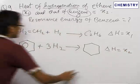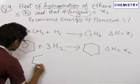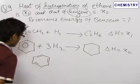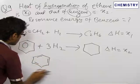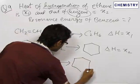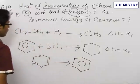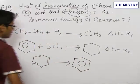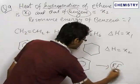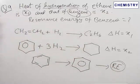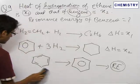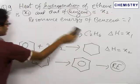Now, what is resonance energy? It is the energy involved when this non-resonating benzene gets converted into the resonance hybrid of benzene. This is the resonance energy of benzene. Now, what we do is we write the equation for the hydrogenation of this non-resonating benzene.